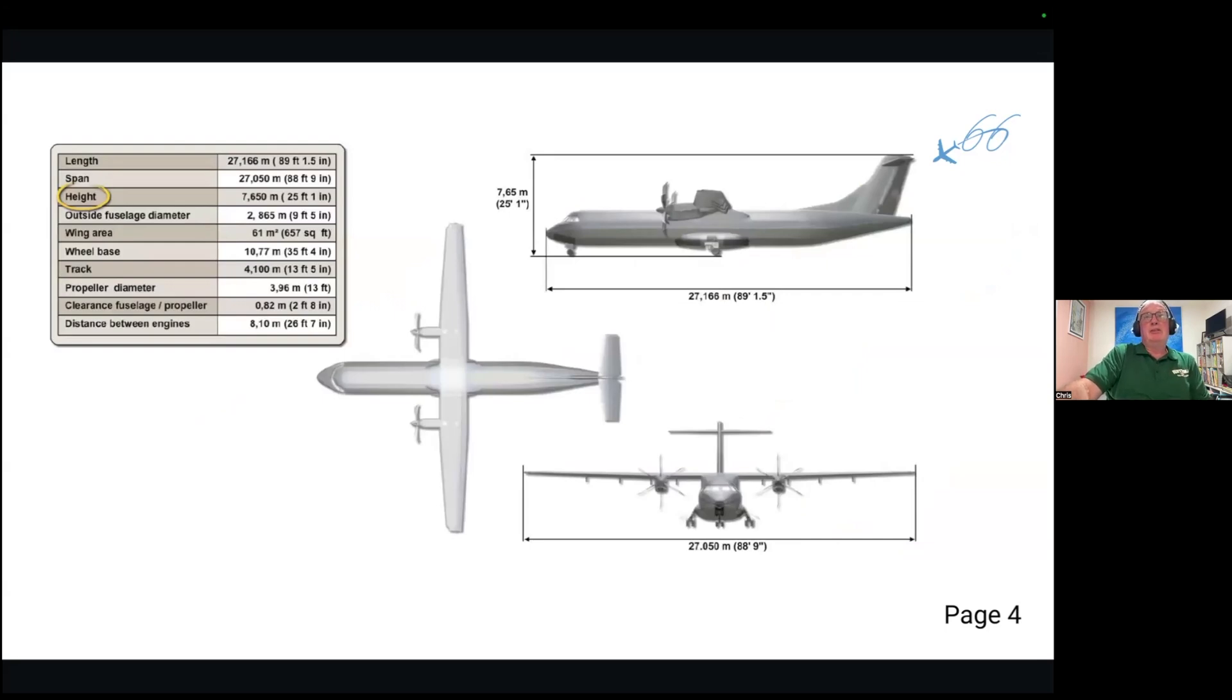Here are some dimensions, and each interested party can take their own important notes. For example, the refueler needs to know the height of the wingtip area. The marshaller needs to know the overall width of the aircraft. Everyone should know the propeller diameter so we can safely walk around it, and so on.